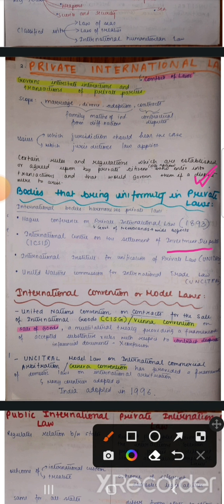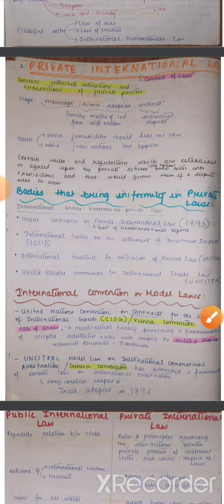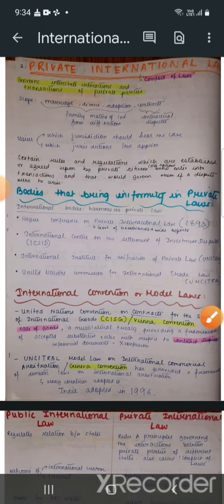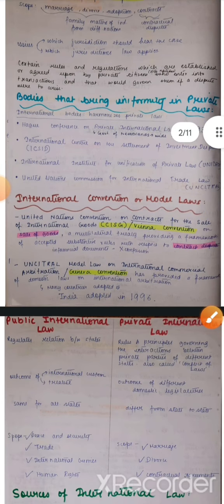United Nations Commission for International Trade Law — UNCITRAL. Ye sab kuch commercial aspects ke liye hai. Then we come to International Conventions or Model Laws — ye yahan pe do cheezein hain, kaafi baar aate hain.